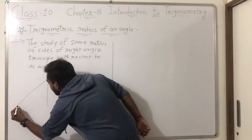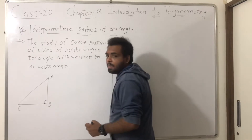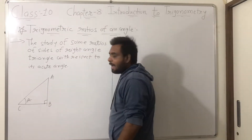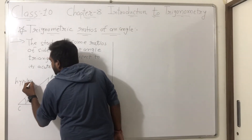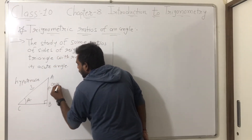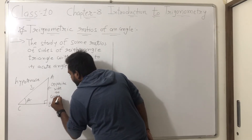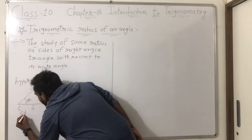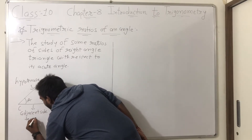This right angle triangle is A, B, and C. The acute angle here is angle A. This side is the hypotenuse. This side is the opposite side to angle A, and this side is the adjacent side to angle A.